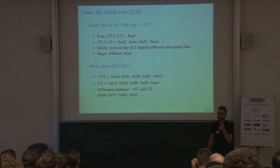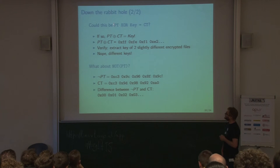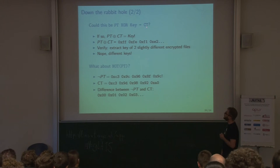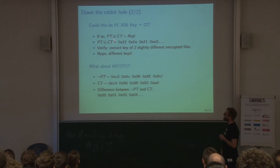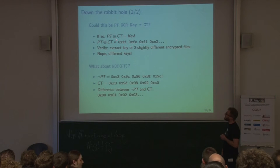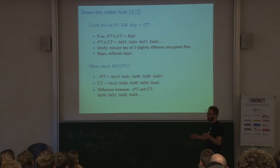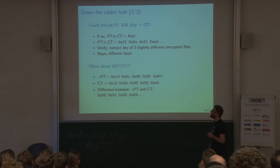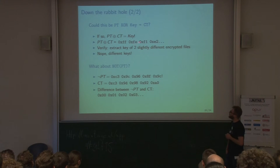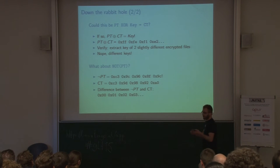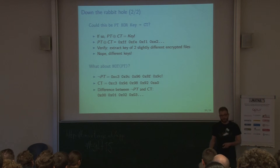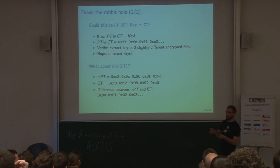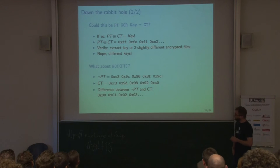Let's try an XOR operation, just for fun. If it's XOR, you take each byte, XOR it with some key we don't know yet, and get the ciphertext byte. You can also take the plain text XOR'd with the ciphertext to get the key — that's the basic property of XOR. We try it on our sample and get a key, then verify with a different file. But it gives a different key — if they use the same fixed key, this cannot be it.